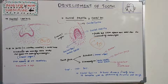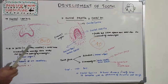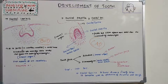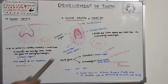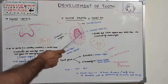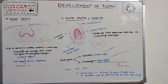Dental lamina is the lingual extension of the primary epithelial band. With more proliferation, a cap-like structure is formed. In this cap stage, we have two components: the dental papilla and the dental sac or dental follicle.